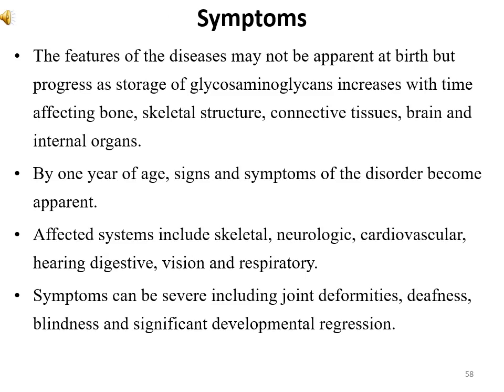Symptoms of mucopolysaccharidoses: the features of these diseases may not be apparent at birth but progress as storage of glycosaminoglycans increases over time, affecting bone, skeletal structure, connective tissues, brain, and internal organs. By one year of age, signs and symptoms of the disorder become apparent. Affected systems include skeletal, neurologic, cardiovascular, hearing, digestive, vision, and respiratory. Symptoms can be severe, including joint deformities, deafness, blindness, and significant developmental regression.